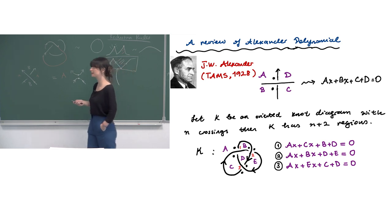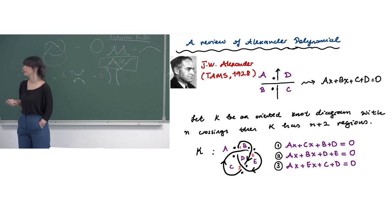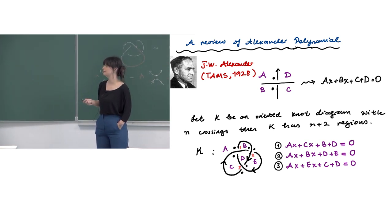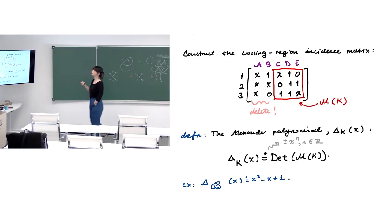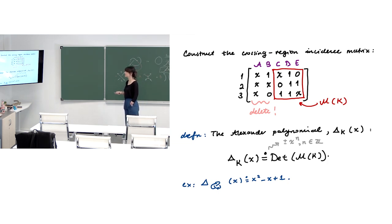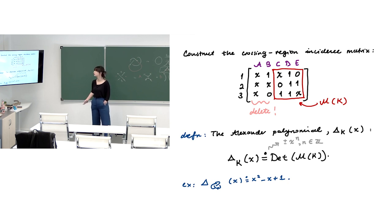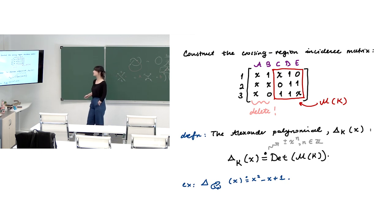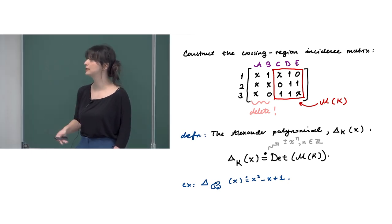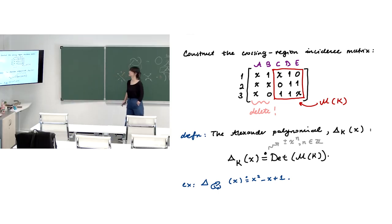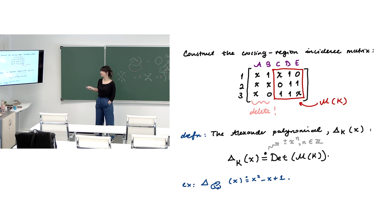Yesterday we talked about the Alexander polynomial and its classical construction. Here is a review: we assign a local weight system around each crossing and extract a system of linear equations represented by an n-by-(n+2) matrix. The idea is to delete two adjacent columns, forming a reduced square matrix, and compute its determinant to get the Alexander polynomial. The polynomial is defined up to a factor of ±x^n for some integer n.